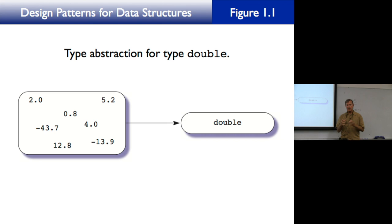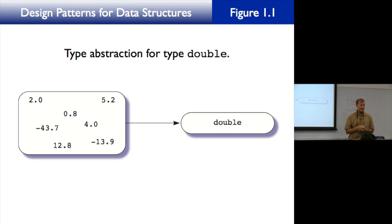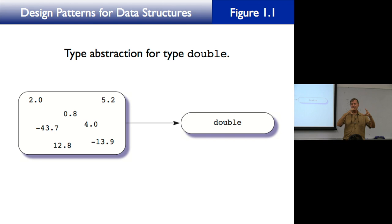A type is a collection of all the possible values that a variable of that type can have. For a variable x of type double, x could have a value of 2.0, 0.8, negative 43.7, or any positive, negative, or fractional decimal. The word 'double' hides all those details — that entire collection of possible values. That's called type abstraction, and you use it all the time in programming.